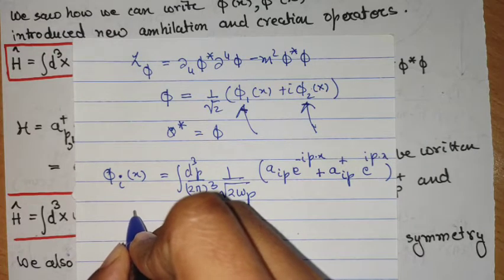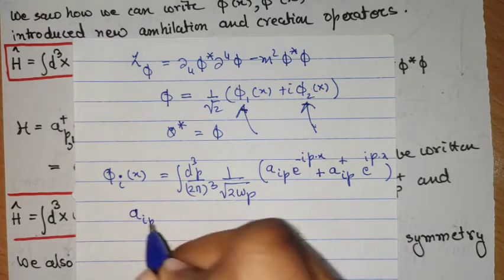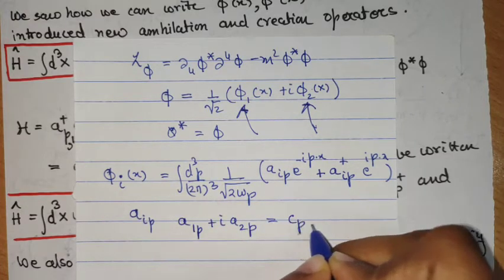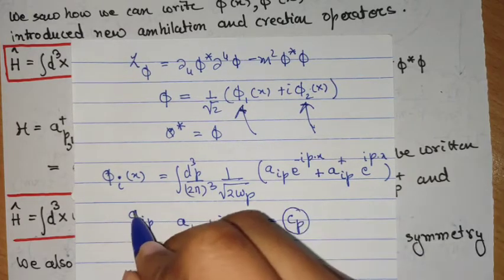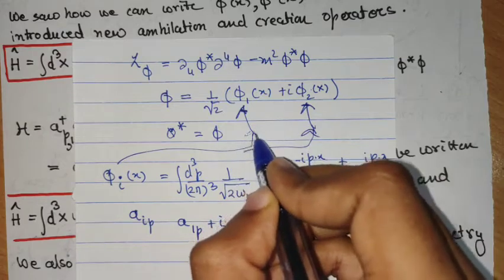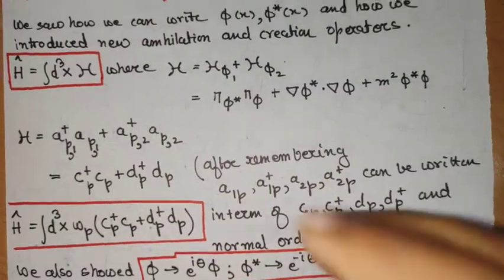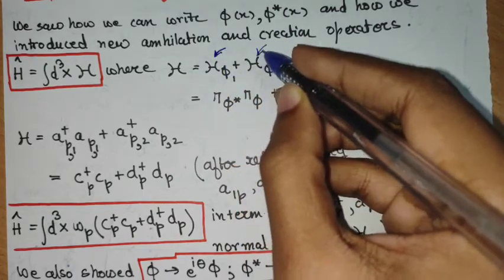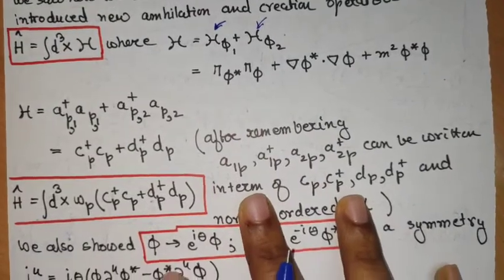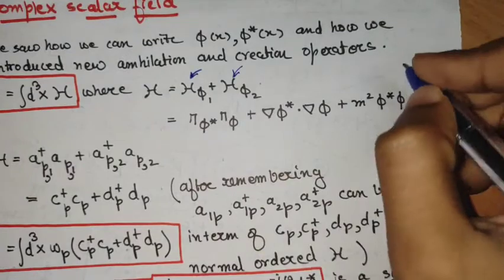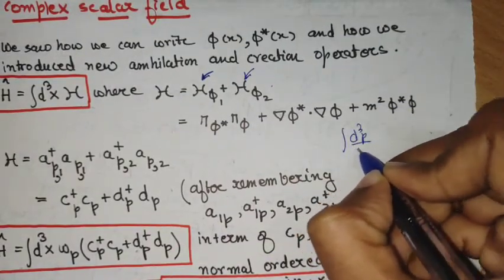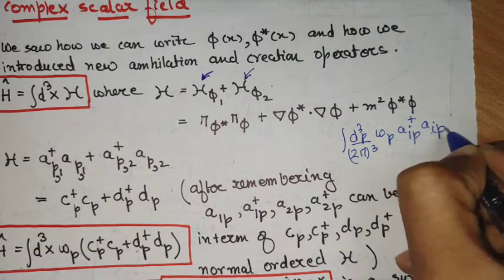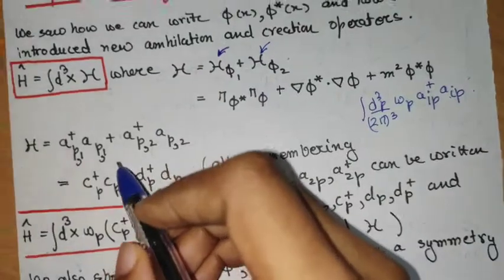We also saw that a 1 p plus i times a 2 p equals c p, which is an annihilation operator, and that can be seen because when we put the expression for phi 1 and phi 2 we obtain phi. The Hamiltonian can be written as the sum of the two Hamiltonians — one for each real scalar field. The Hamiltonian of a real scalar field is of the form d³p over (2π)³ times omega p times a i p dagger a i p, so we can plug in and add these two Hamiltonians.